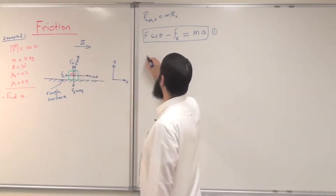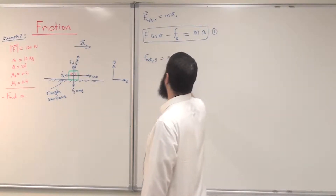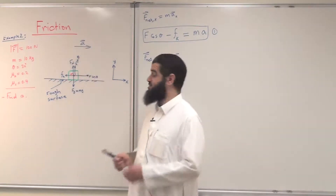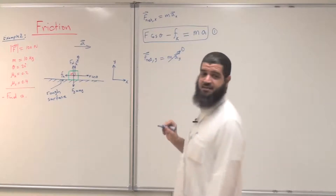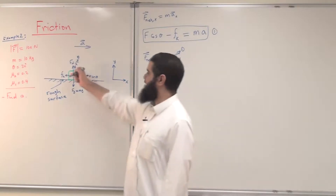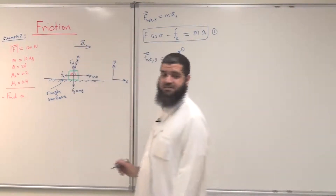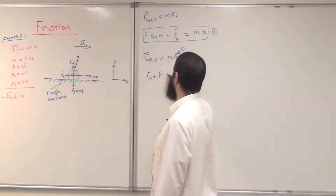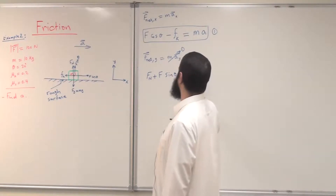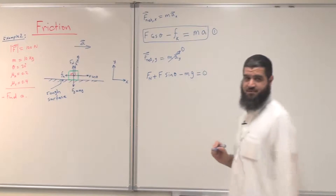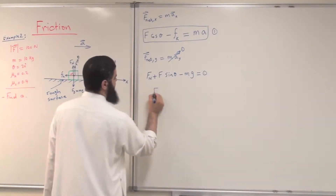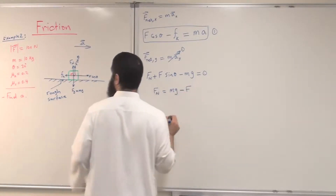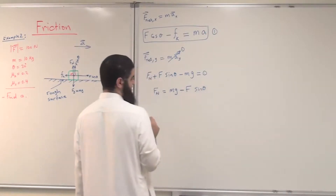Applying Newton's second law along the y-axis: F_net_y = m * a_y. There is no motion along y, so a_y = 0. The forces along y are the normal force and f sine theta upward, and mg downward, giving: fN + f sine theta − mg = 0. Rearranging: fN = mg − f sine theta.